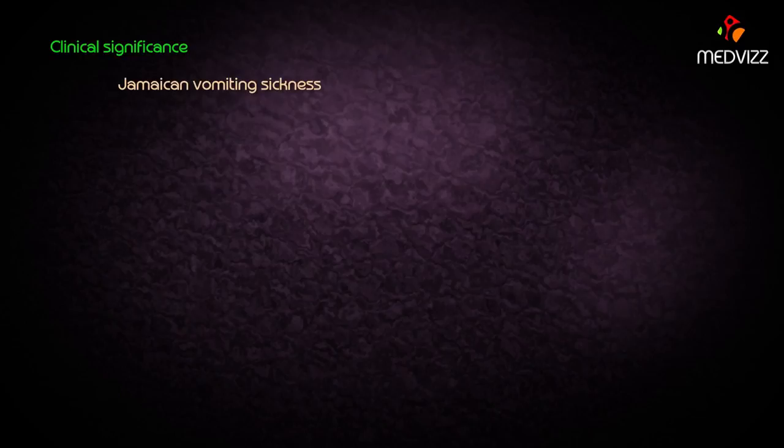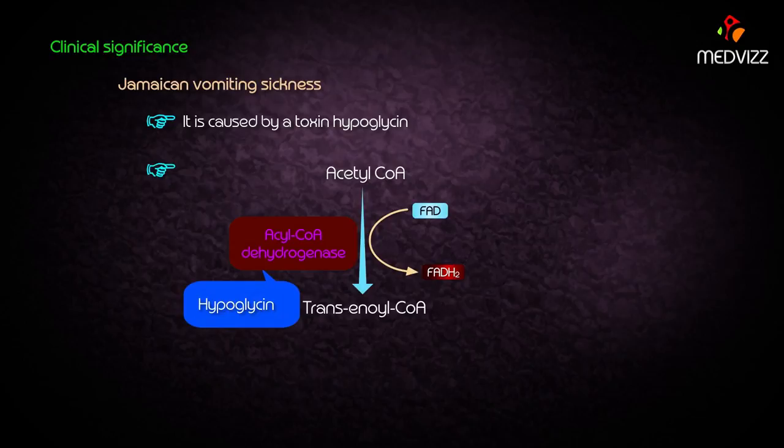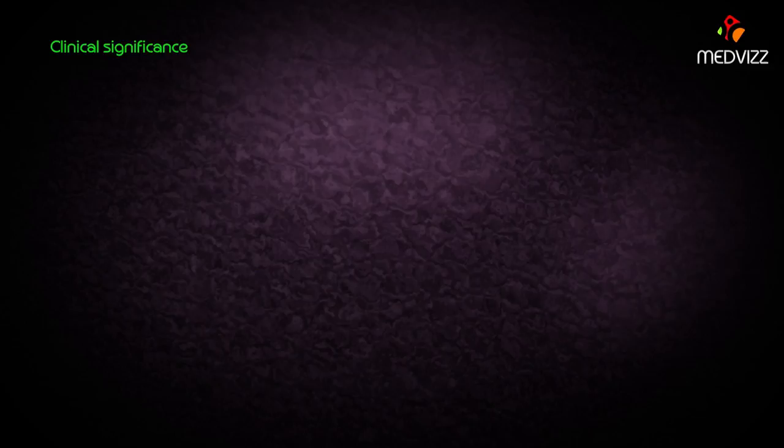Jamaican vomiting sickness is caused by a toxin called hypoglycin A. This toxin inhibits medium and short chain acyl CoA dehydrogenase, which leads to non-ketotic hypoglycemia.